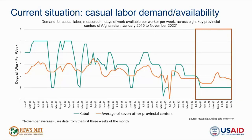In addition, there has been a reduction in opportunities for income earning since the Taliban takeover. For instance, the ILO estimates that around 500,000 people lost their jobs in the third quarter of 2021. There was also a reduction in demand for labor, which is an important source of income for poor households, especially in urban areas.